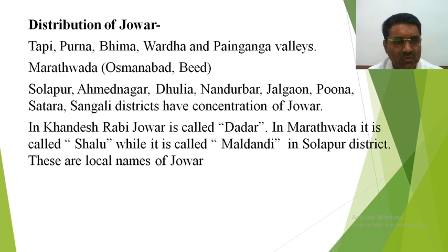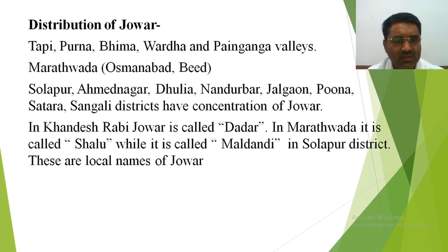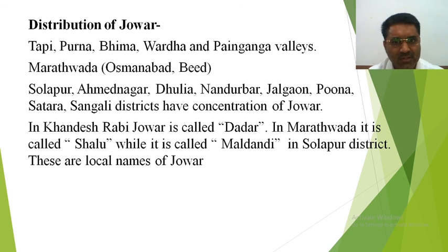Jowar is easy to digest and easy to grow. In Khandesh, rabi jowar is called 'dadar,' which is its local or native name. In Marathwada, it is called 'shalu,' while in Solapur district it is known as 'maldandi.' Jowar is an important crop grown throughout Maharashtra except in the Konkan region and some other patches.